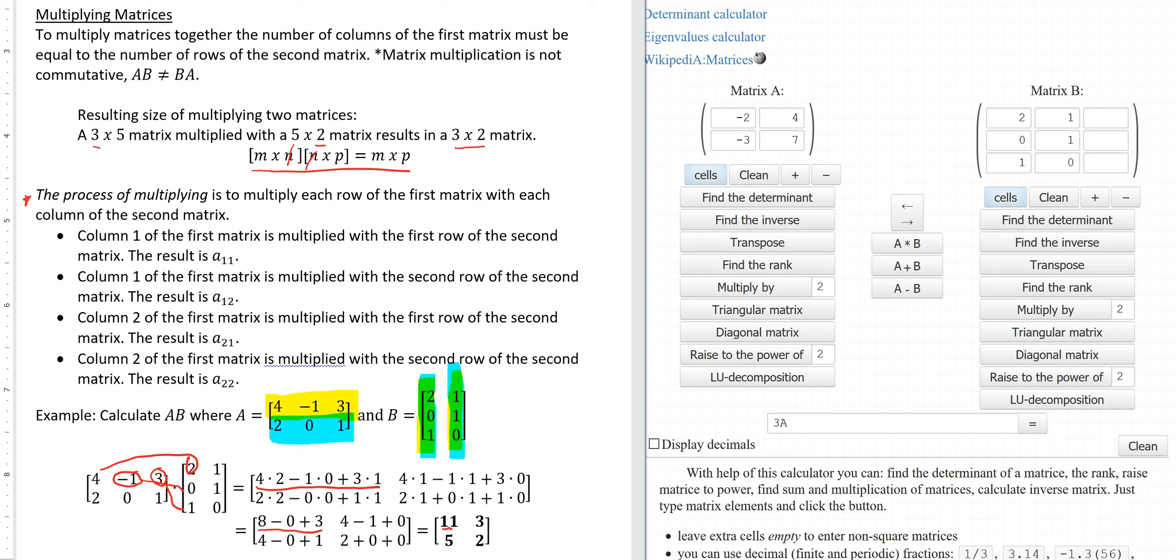Then I take that first row and multiply it with the second column. So I want to take that same first row and multiply it with the second column. I multiplied 4 times 1, negative 1 times 1, and 3 times 0 to give me 4 minus 1 plus 0 which is 3.